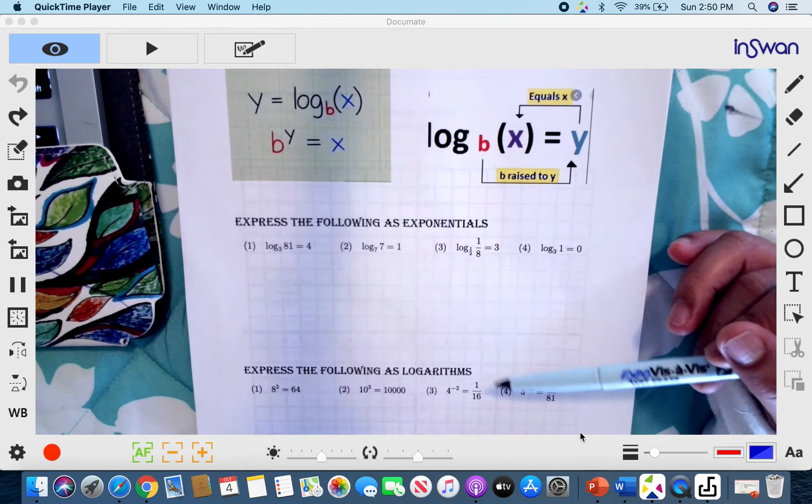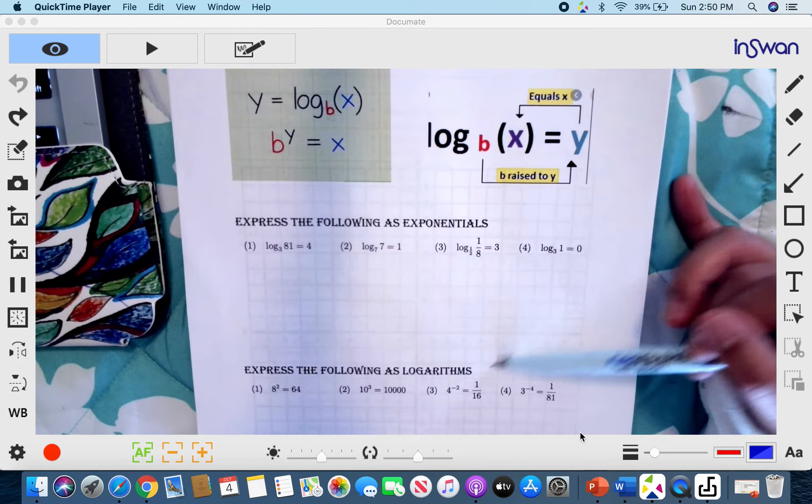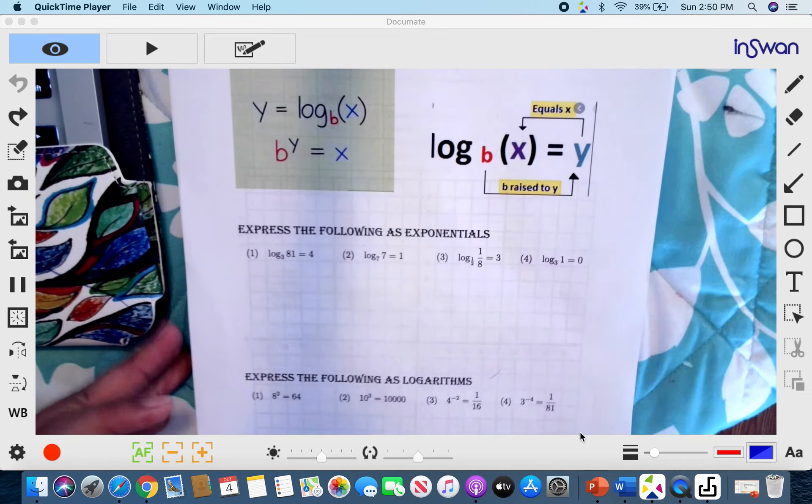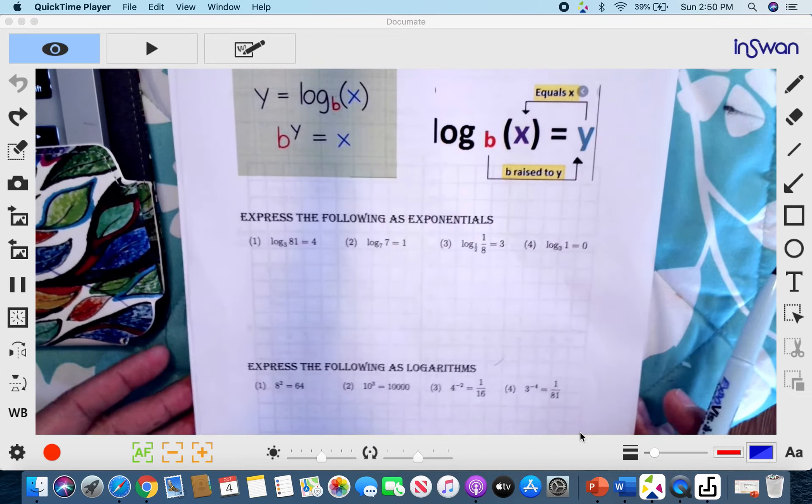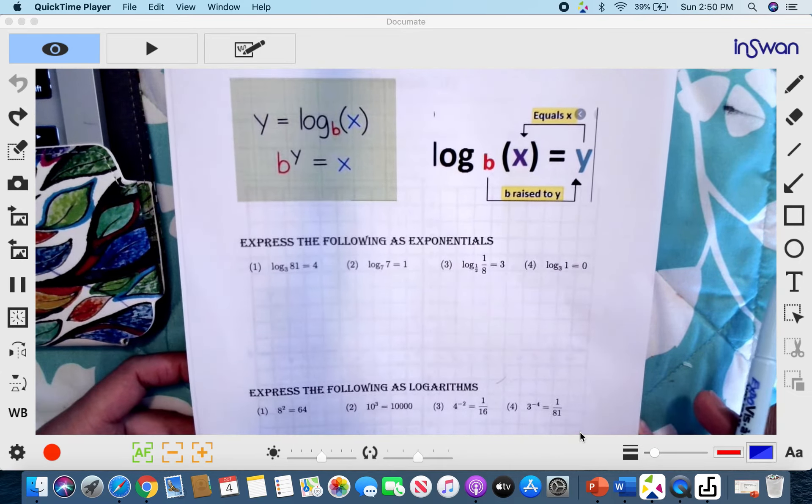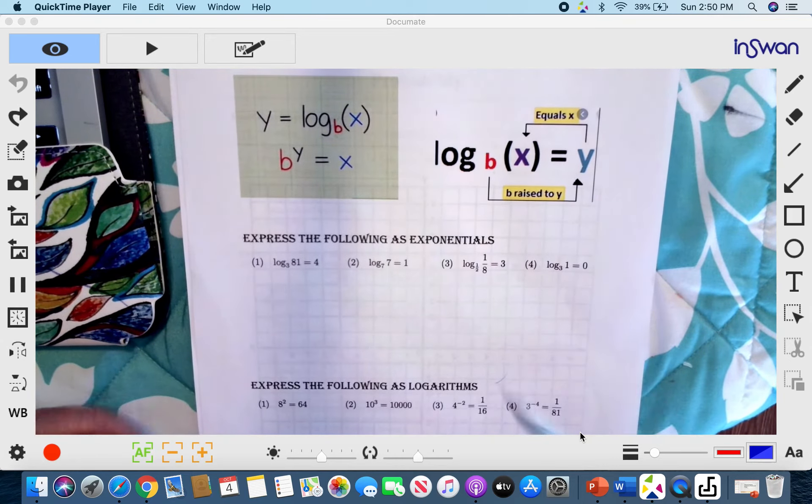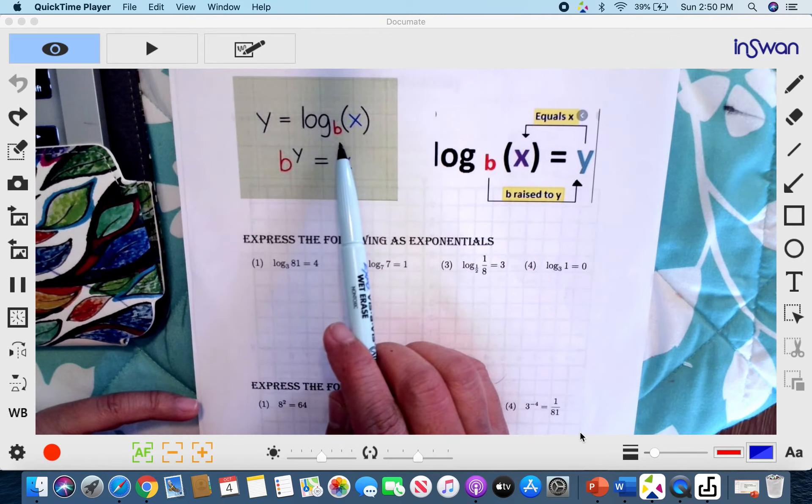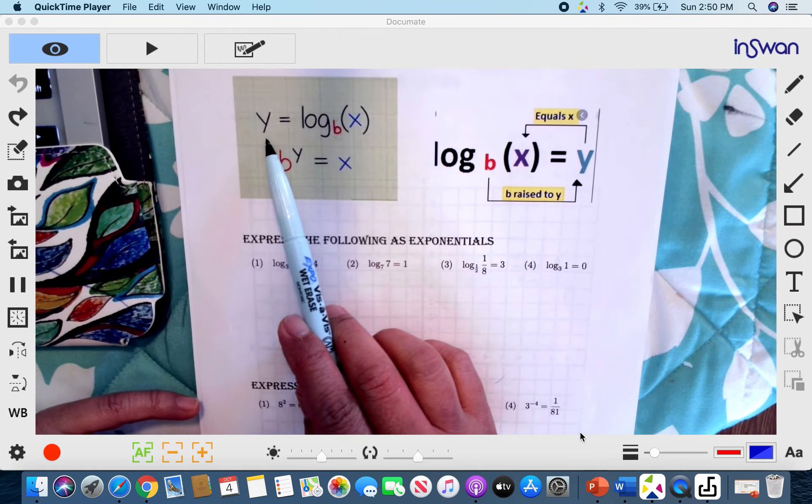Conversely, if you cannot solve logarithm by itself, you need to use exponentials. So what is the meaning of logarithm? Logarithm simply means exponent. So therefore, I always say this, the answer in logarithm is an exponent. So if you have y equals logarithm of x base b, it means your y is your exponent. And you can express this as b raised to y equals x.